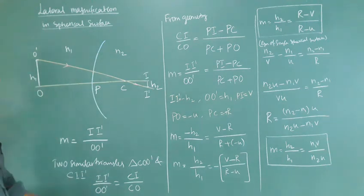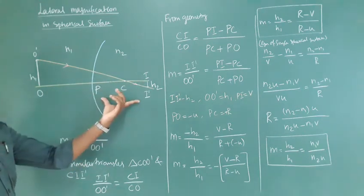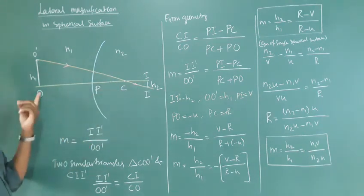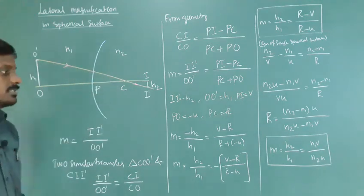PI is image distance, positive axis plus V. PO is object distance, minus U. PC is the radius of curvature, plus R.